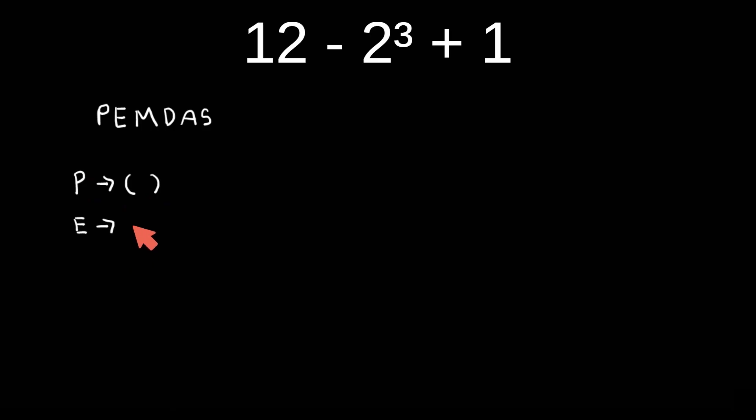The E is called exponents and represents an exponent. The M and D—with these two you have to be very careful—because whenever you see multiplication or division, we always solve these operations from left to right.